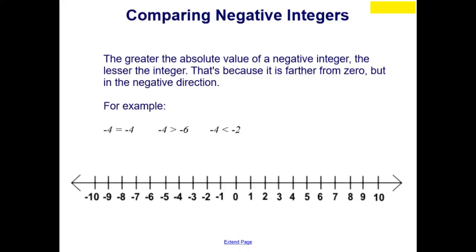The greater the absolute value of a negative integer, the lesser the integer. That's because it is farther from 0, but in the negative direction. So we can look at and use the number line to show that this is true.